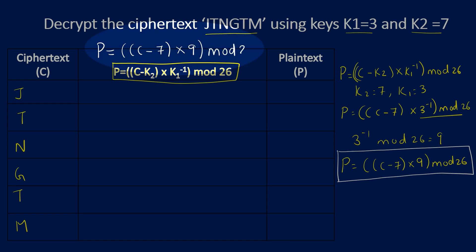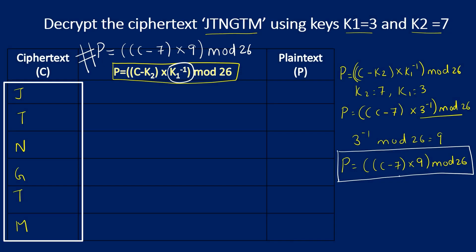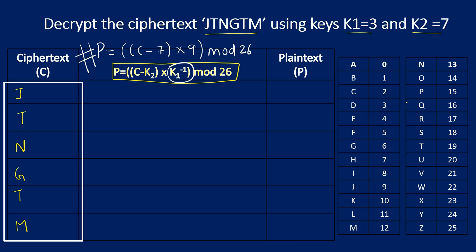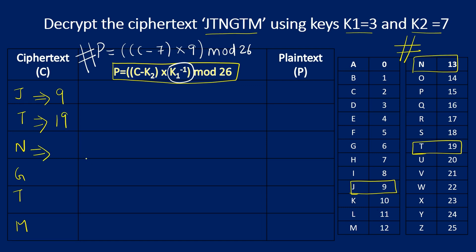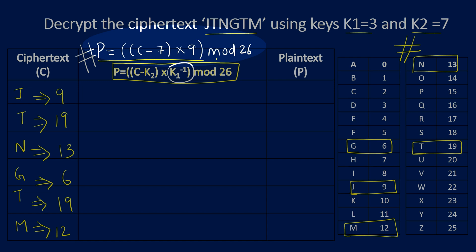Since decryption uses subtraction and multiplication, we must convert the ciphertext letters into numbers using the standard A=0 mapping table. J maps to 9, T maps to 19, N maps to 13, G maps to 6, T maps to 19, and M maps to 12.